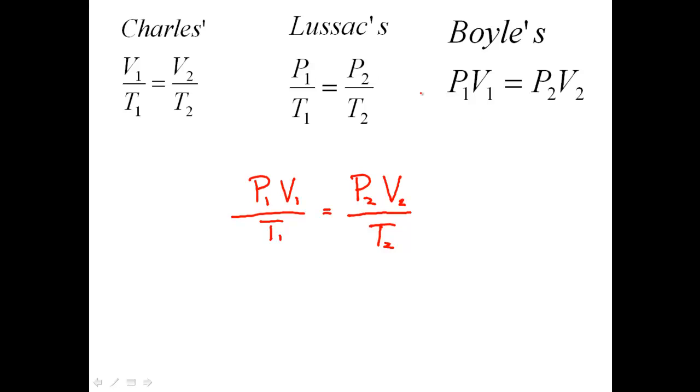So we check that out. We see all three of these now can be combined into one, and this is known as the Combined Gas Law. All right, just a little note here. All temperatures must be expressed in your Kelvin temperature. They must be expressed using this, and Kelvin is going to be your Celsius temperature plus 273.